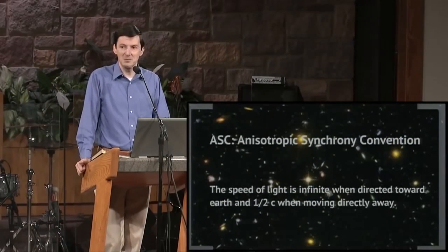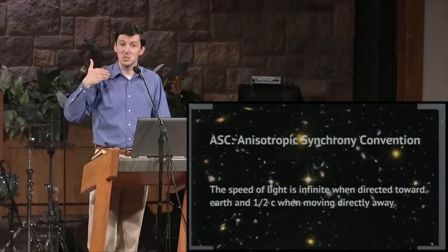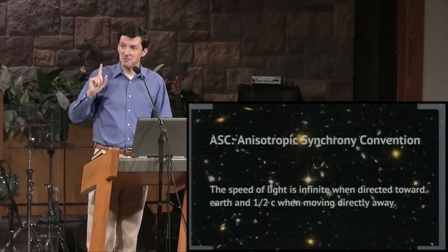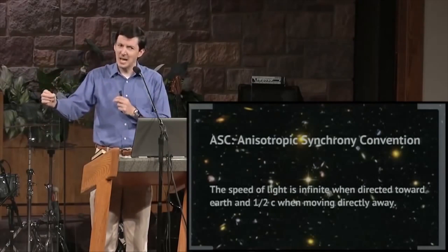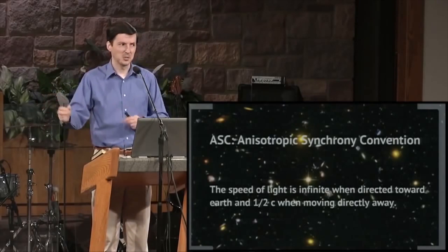Which means I can choose it to be something very different than what most people do. In fact, I can choose the speed of light to be infinite when it's directly toward me and half c when it's moving away. And the reason I picked those two values, it has to average to c. It has to average to the speed of light that's the round-trip speed.